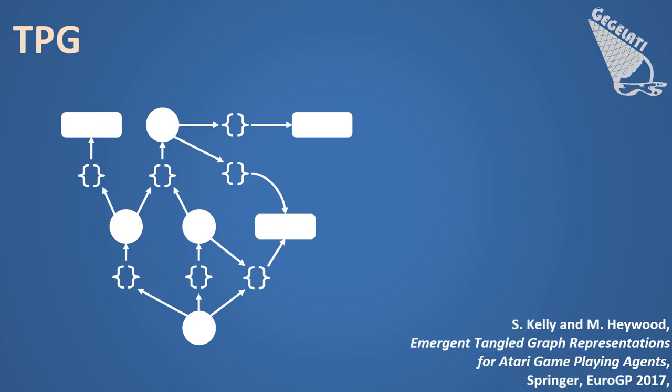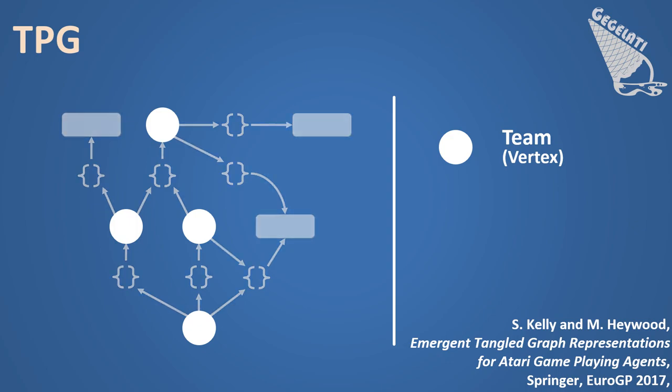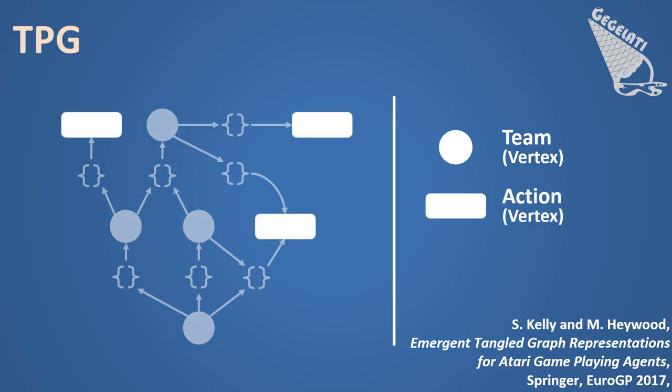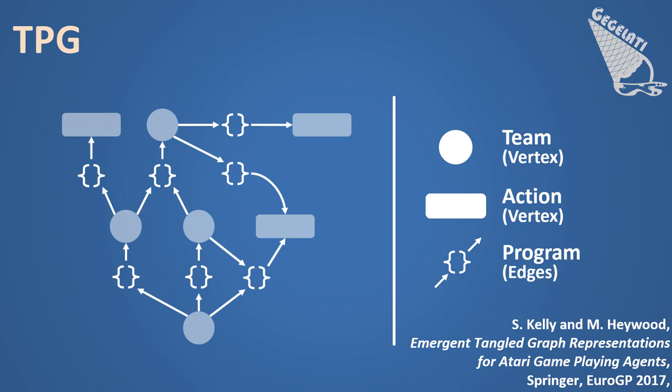TPGs were first introduced in 2017 by Stephen Kelly and Malcolm Haywood from the Dalhousie University of Halifax in Canada. As indicated by its name, the learning algorithm behind TPGs is modeled as a directed graph. In a graph, three types of elements can be identified: Teams, which are the internal vertices of the graph; Actions, which are the leaf vertices of the graph; and Programs, which are the edges of the graph.